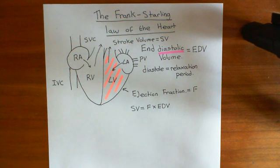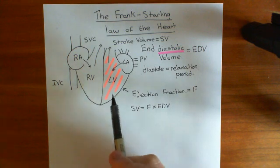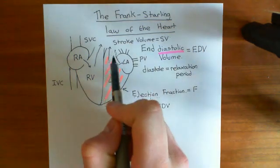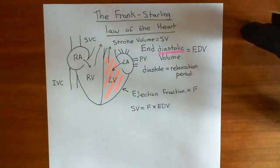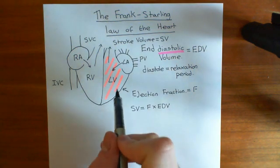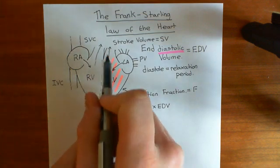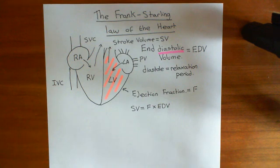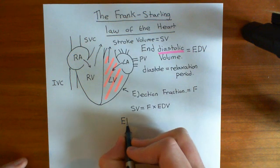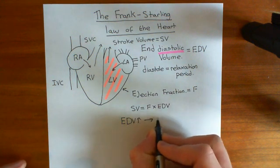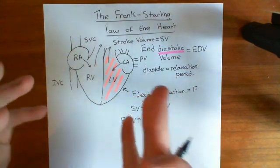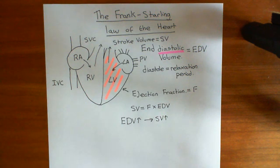So the Frank-Starling law of the heart is this: if you increase the amount of blood in the left ventricle before it contracts — i.e. you increase the end diastolic volume — then the stroke volume is also going to increase. If you shove more blood into the left ventricle before it contracts, then the amount of blood ejected into the aorta will also get bigger. So: if EDV goes up, then stroke volume goes up.